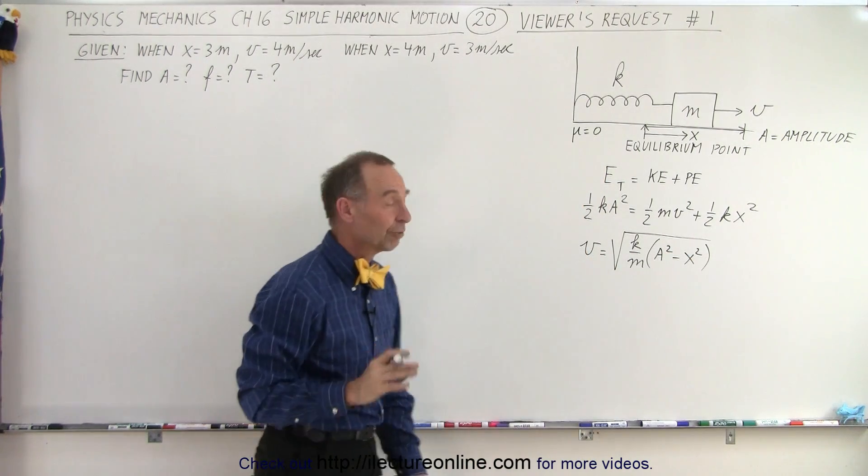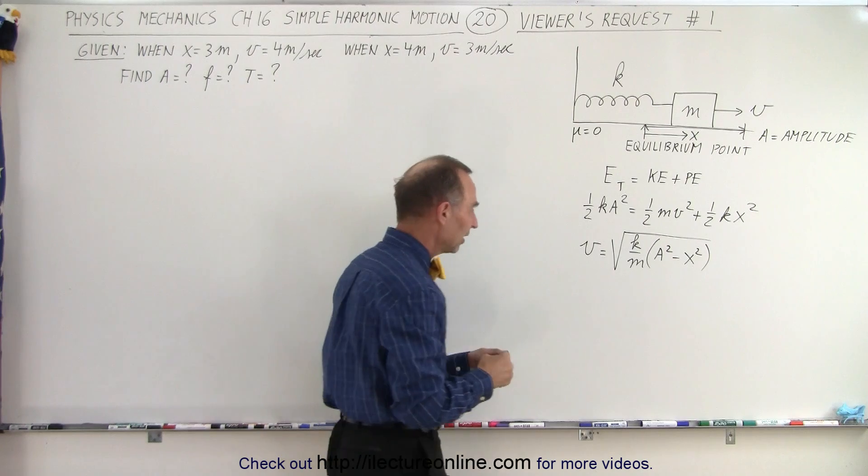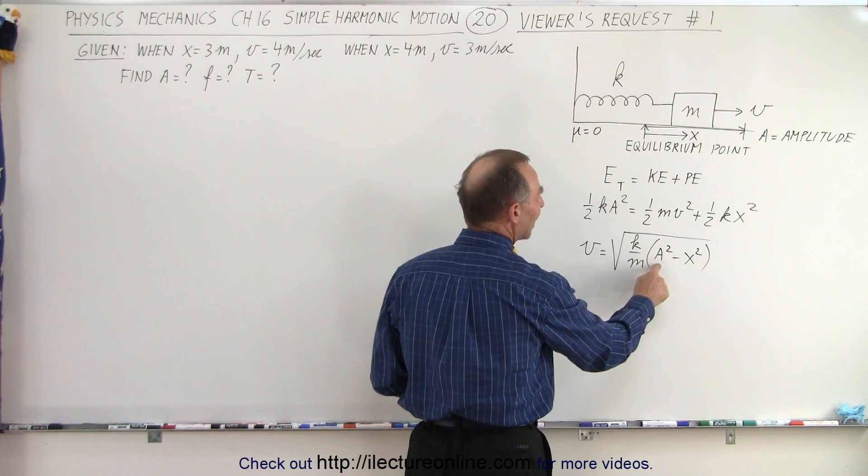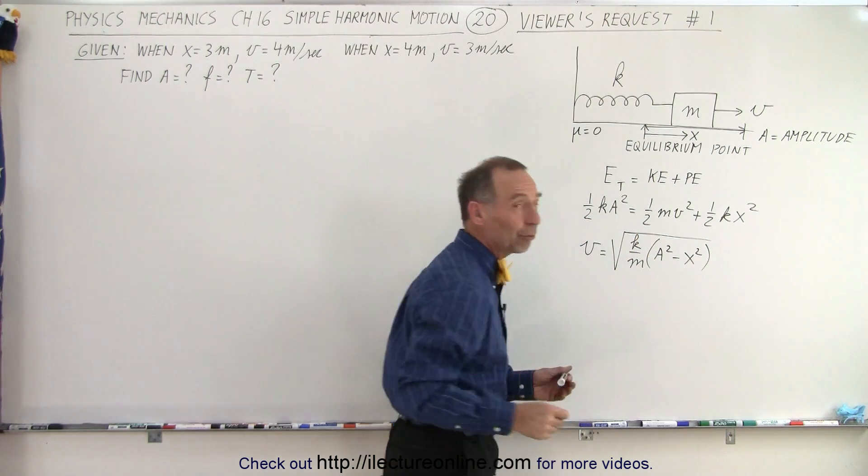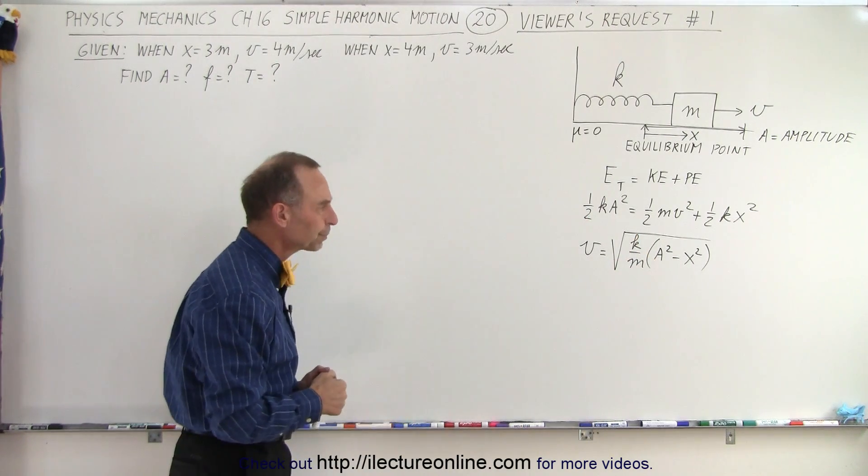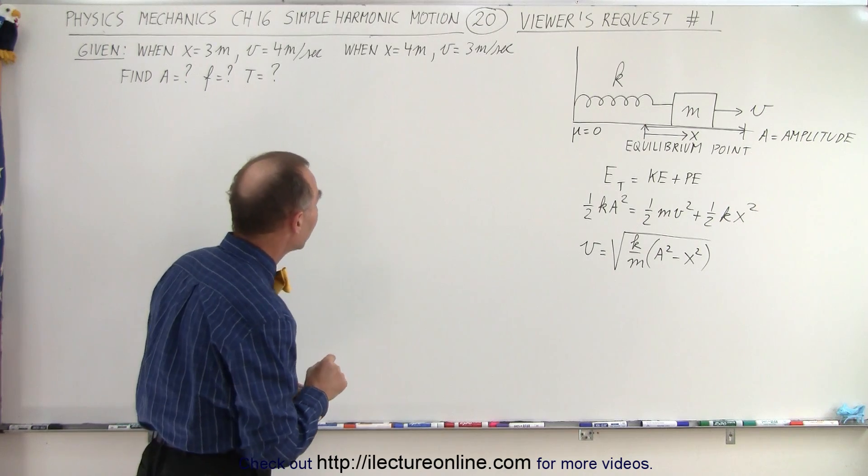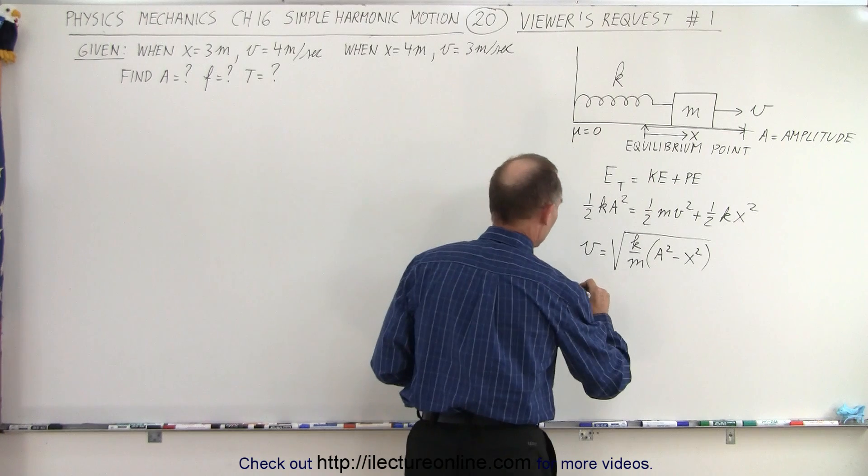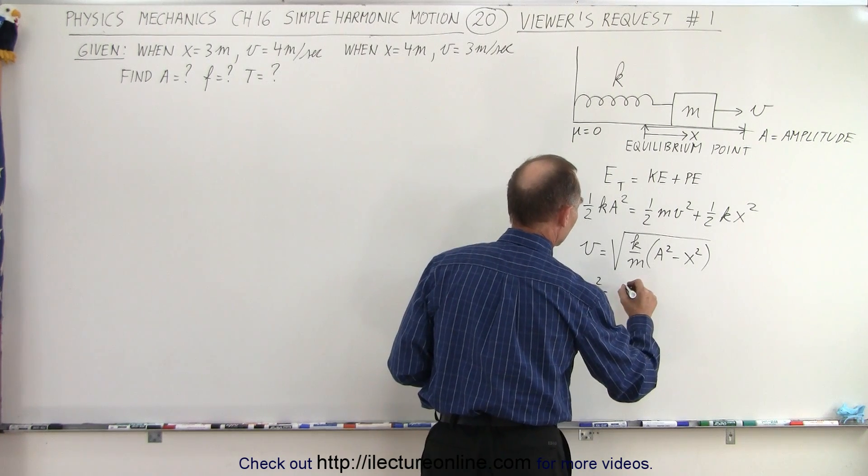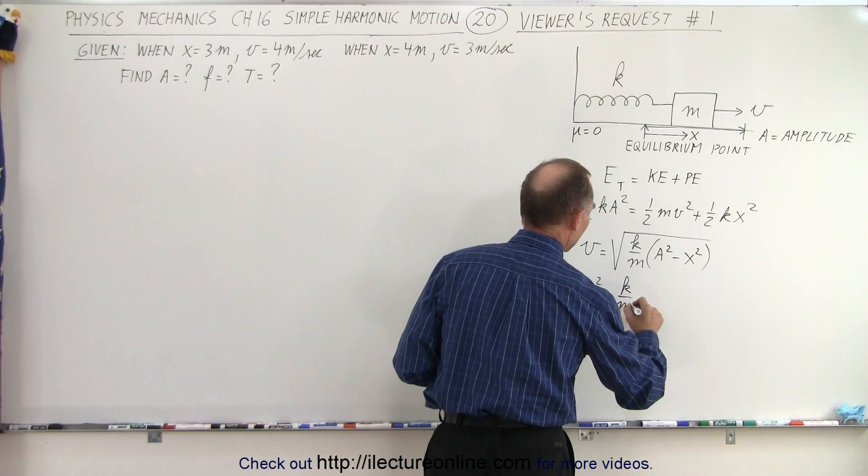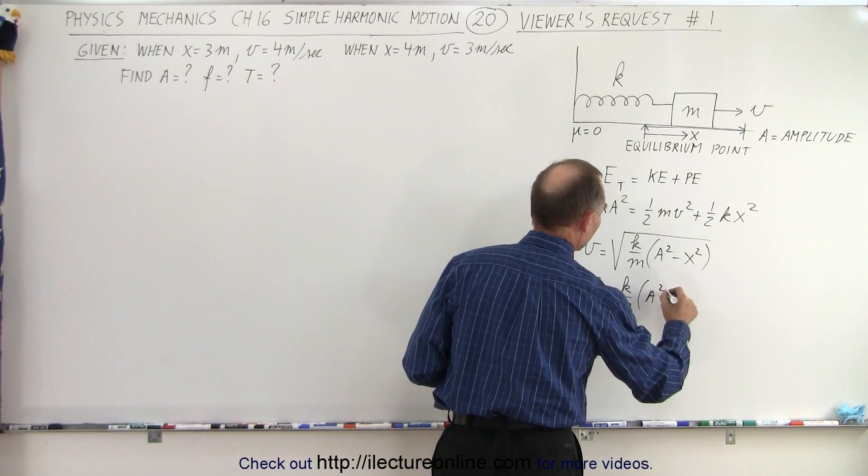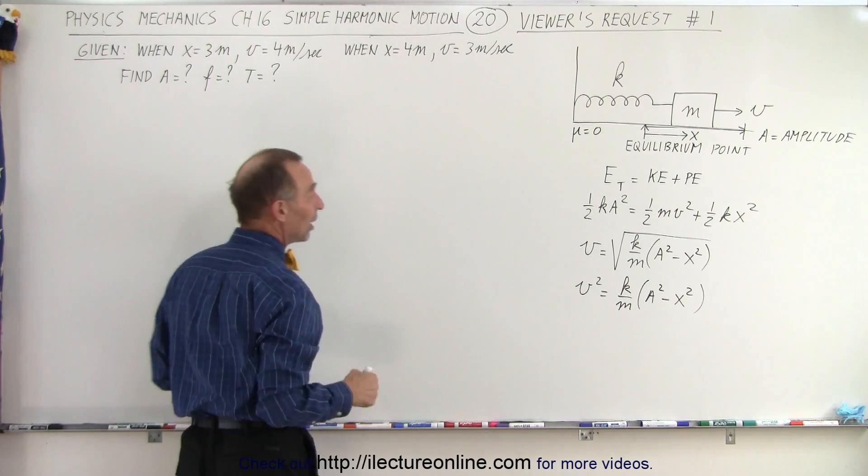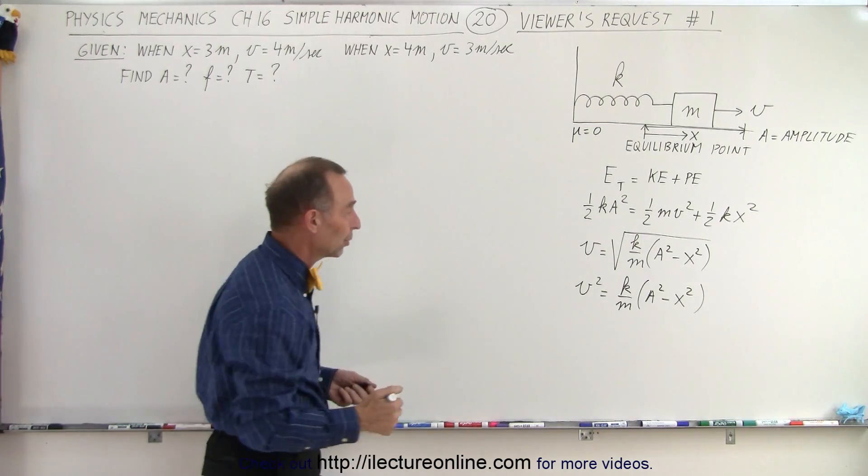Notice that the velocity is related to x using this equation, a is a constant, and k over m of course would be a constant as well. So what we can do is we can first square both sides of the equation, so we end up with v squared equals k over m times a squared minus x squared. And then we can put these values into the equation twice to get two separate equations.